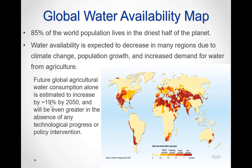This map shows global water availability, pointing to areas where water is over-exploited. Over-exploited regions are shown in maroon, heavily exploited regions in red, and moderately exploited regions in orange. The arid regions face the most severe problems. In fact, 85 percent of the world population lives in the driest half of the planet.